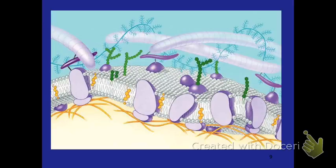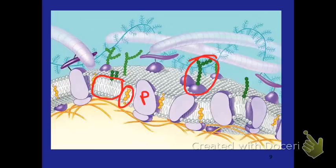Here is a really cool 3D picture of how this all works in our cells. You can see the big purple things — those are proteins. You can also see the cholesterol. All the little gray things are our phospholipids, and we have some glycoproteins here. It's just a beautiful mosaic of all these different things.